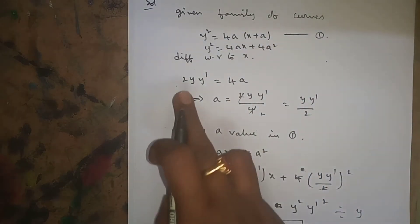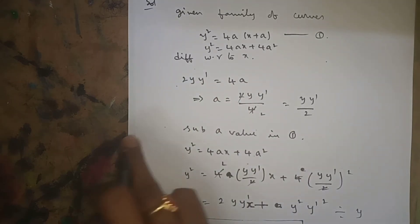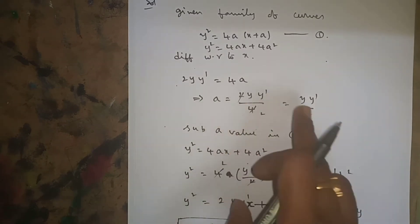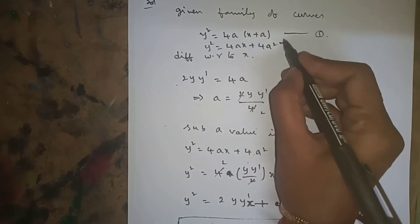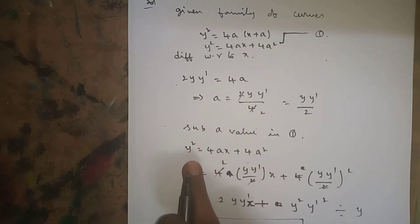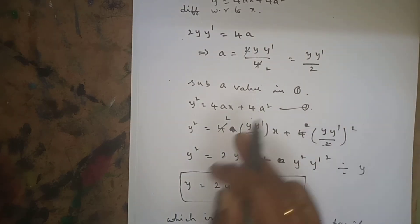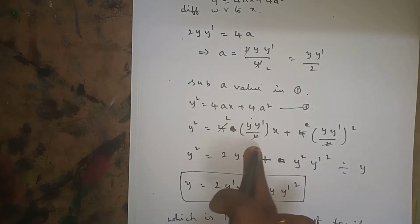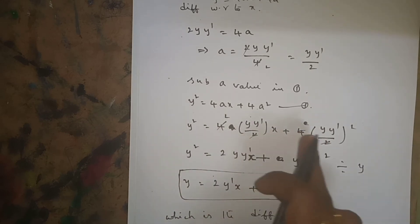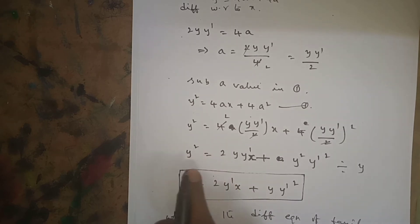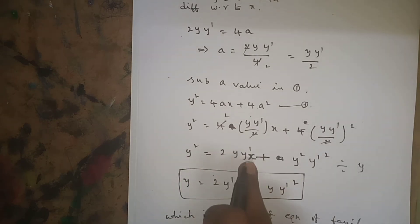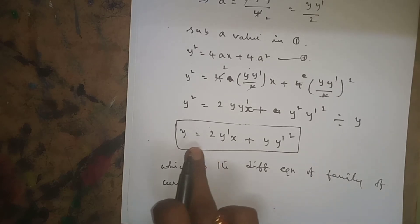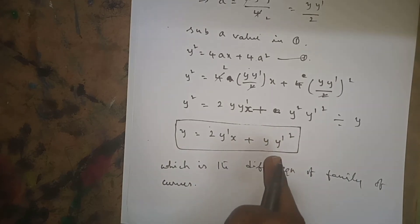Differentiating with respect to x: 2y·y' = 4a, therefore a = y·y'/2. Substituting a value into equation 1 (y² = 4ax + 4a²), we get y² = 2y·y'·x + y²·y'². Dividing the whole equation by y, we get the differential equation y = 2x·y' + y·y'².